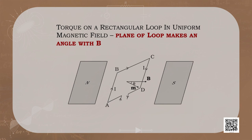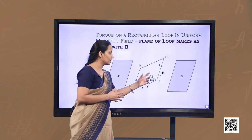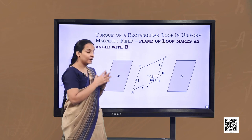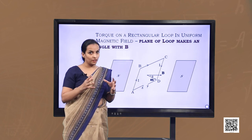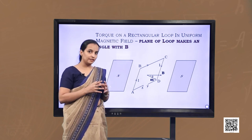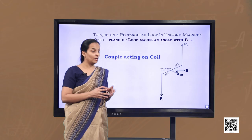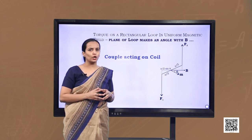Further, we consider the case where the plane of the loop is not along the magnetic field but makes an angle theta with it. On arms BC and AD, forces are equal and opposite but collinear, so there is no torque. For arms AB and CD, F1 and F2 are also equal and opposite but not collinear, forming a couple that produces torque. However, the perpendicular distance between the forces has decreased, so the torque decreases.